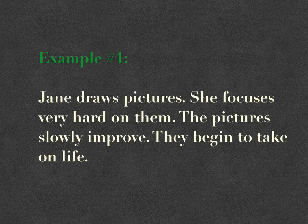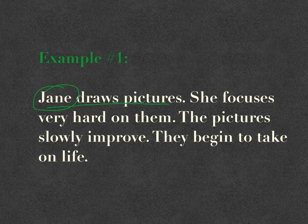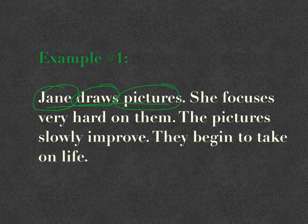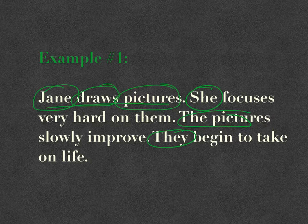Example one: 'Jane draws pictures. She focuses very hard on them. The pictures slowly improve. They begin to take on life.' You can see that these sentences are very short and simple — three words each: subject, verb, object. That's as simple as it gets. The subject is at the beginning of each sentence, so the structure is very simple.